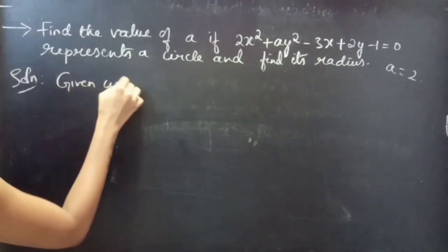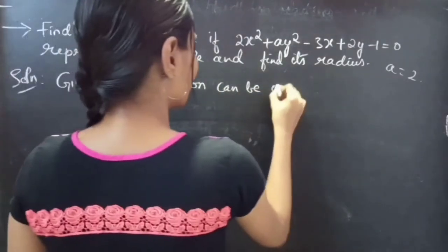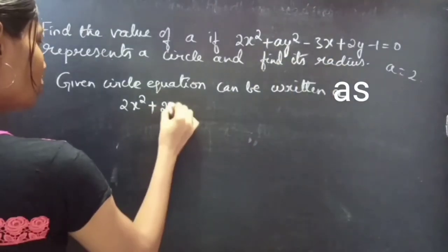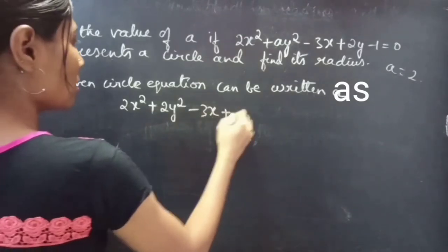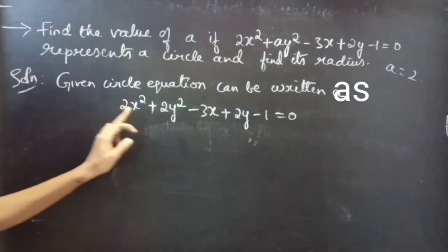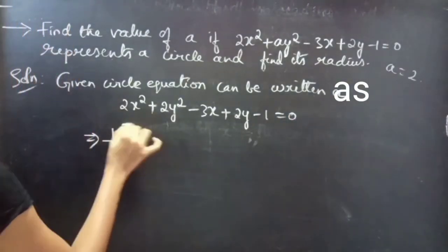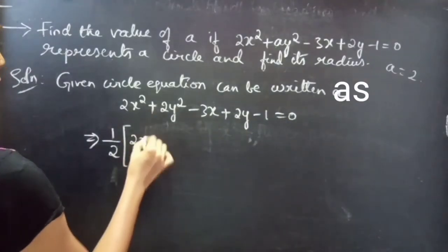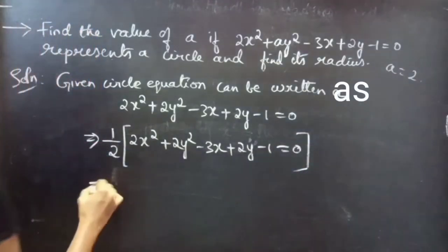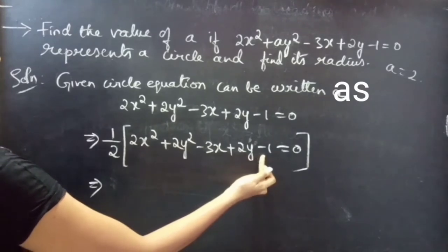Now, the given circle equation can be written as: 2x squared plus 2y squared minus 3x plus 2y minus 1 equals 0. The coefficient of x squared and y squared must be 1, so we divide the entire equation by 2. Multiplying 1 by 2 gives: 1/2 into (2x squared plus 2y squared minus 3x plus 2y minus 1) equals 0.